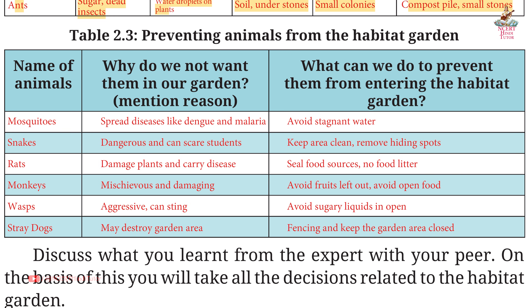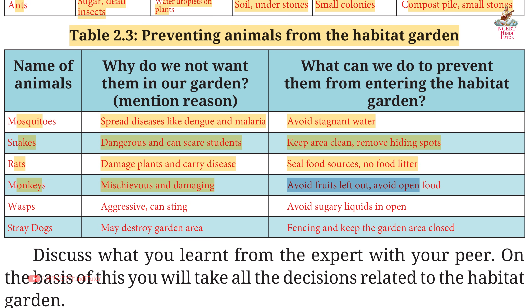Table 2.3 — Preventing unwanted animals from the Habitat Garden. Mosquitoes: spread diseases like Dengue and malaria; prevent by avoiding stagnant water. Snakes: dangerous and can scare students; keep area clean, remove hiding spots. Rats: damage plants and carry disease; seal food sources, no food litter. Monkeys: mischievous and damaging; avoid leaving fruits or open food out.